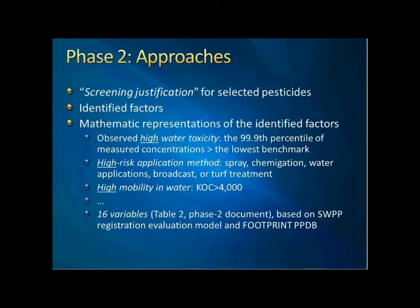For chemical properties, for example, we have high mobility in water defined as KOC not greater than 4,000. In summary, we have 16 variables documented, and their development is mainly based on our registration evaluation model and the Footprint database.